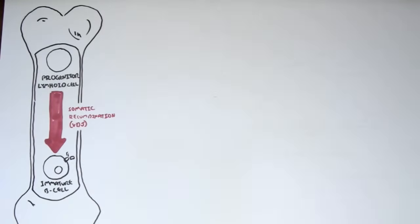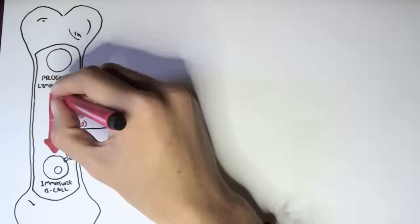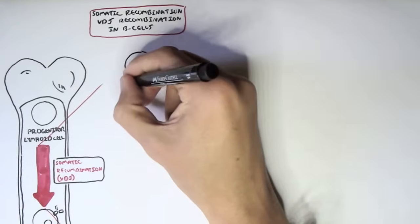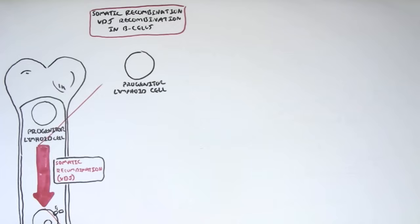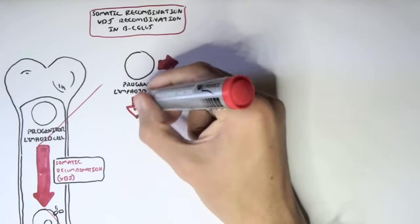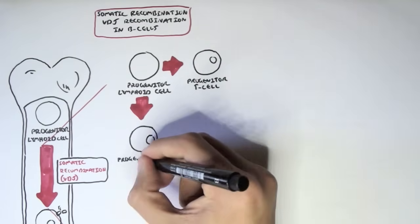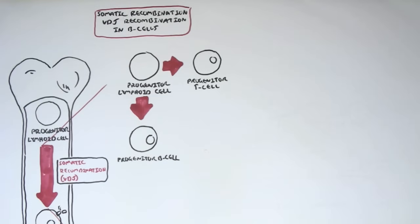But this in itself is a very simple diagram. It's actually a bit more complicated. In that first, the progenitor lymphoid cell can become a progenitor T cell. Or in this case, what we're actually looking at is that the progenitor lymphoid cell can become a progenitor B cell.